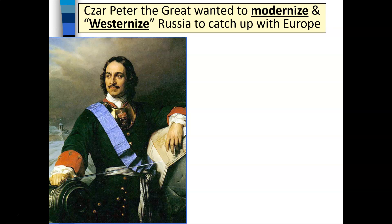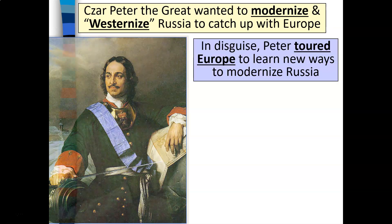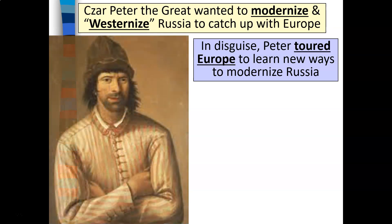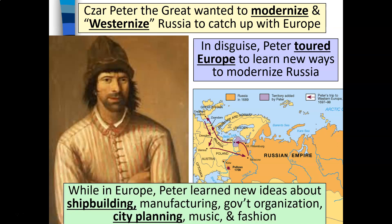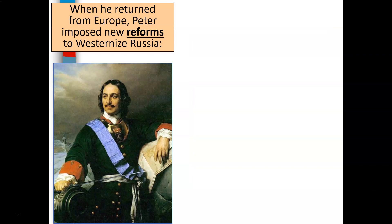Czar Peter the Great had a vision for Russia — he wanted to modernize and westernize Russia to catch up with Europe. In disguise, he was able to travel around Europe to learn new ways meant to modernize Russia. While in Europe, Peter learned new ideas about shipbuilding, manufacturing, government organization, city planning, music, and fashion, and he used all of that information when he returned to Russia.